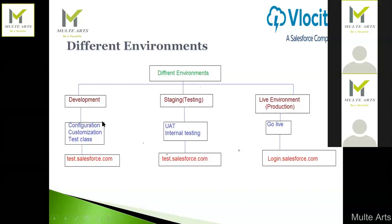We start building Velocity configurations in the developer environment. Once development is complete, we push to QA, SIT, and UAT, and then finally move to production. For those new to Salesforce: the sandbox URL is test.salesforce.com and production is login.salesforce.com.